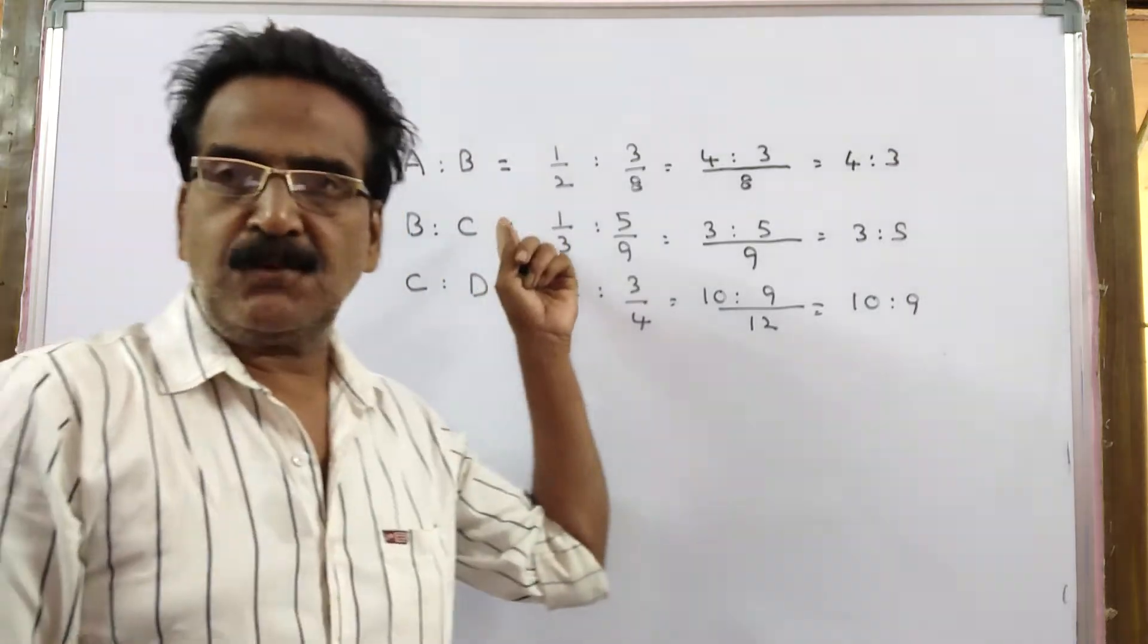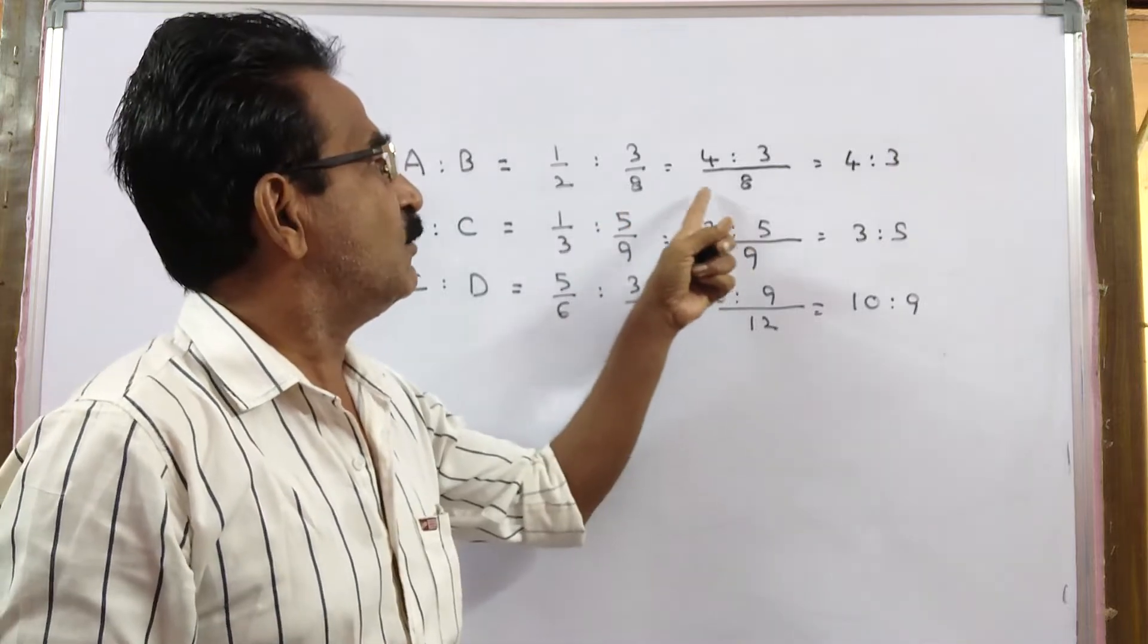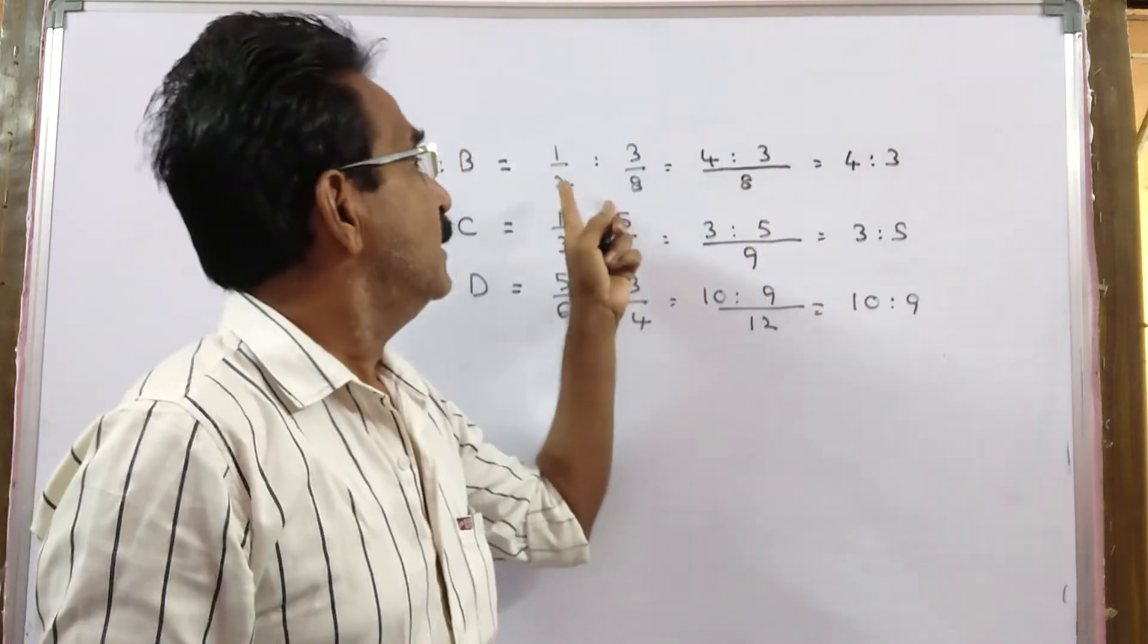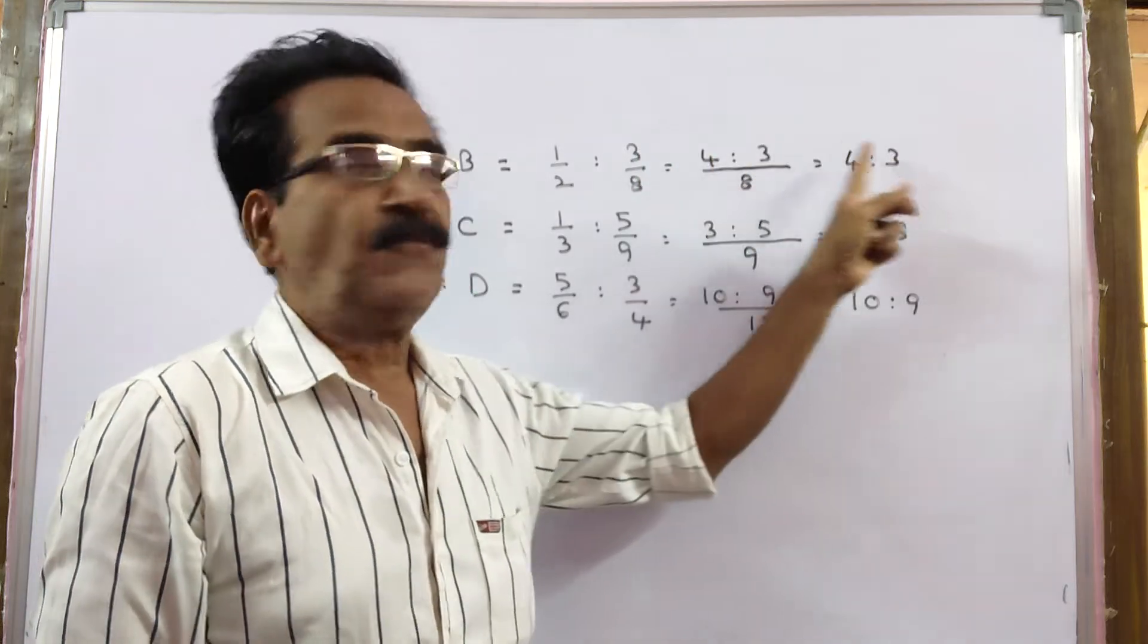See friends, here A is to B is equal to 1 by 2 is to 3 by 8. That is equal to LCM here 8. 2 4's, 4 1's 4, 8 1's, 1 3's 3, so 4 is to 3.